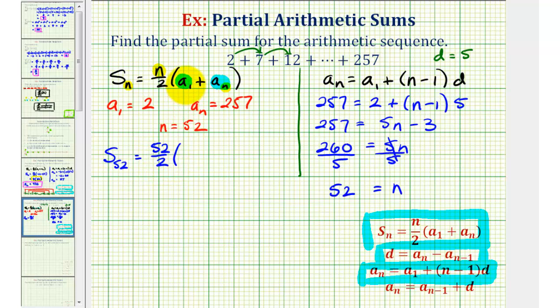times the quantity a sub one, the first term, plus a sub n, the last term, or the 52nd term, which is 257. So 52 divided by two is equal to 26. Two plus 257 is 259, and 26 times 259 is equal to 6,734.